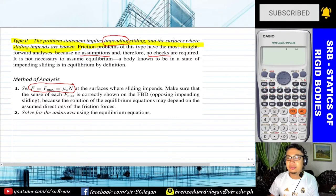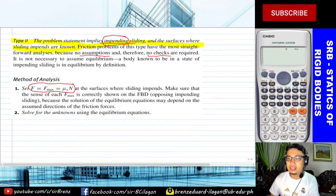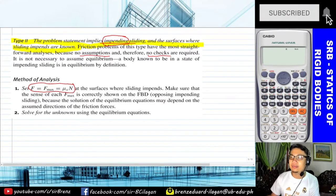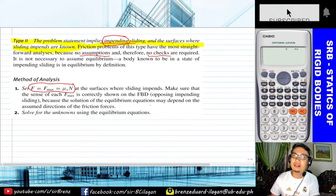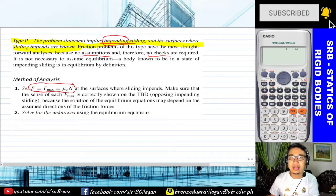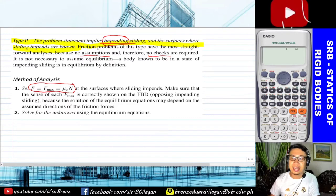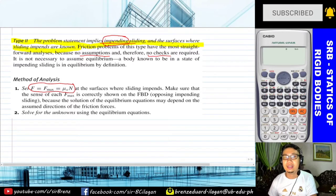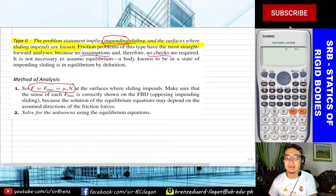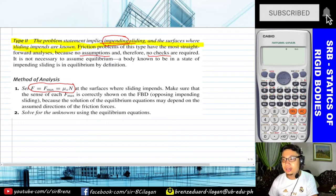Since Type 2 is straightforward and the word 'impending' is specified, you go directly to setting F max. At the surface where sliding impends, make sure the sense of each F max is correctly shown on the free body diagram opposing impending sliding, because the solution of the equilibrium equations depends on the assumed direction of the frictional forces. The direction of the frictional force is always opposite to the direction of motion — friction always resists movement. Step two: solve for the unknowns using the equilibrium equations.